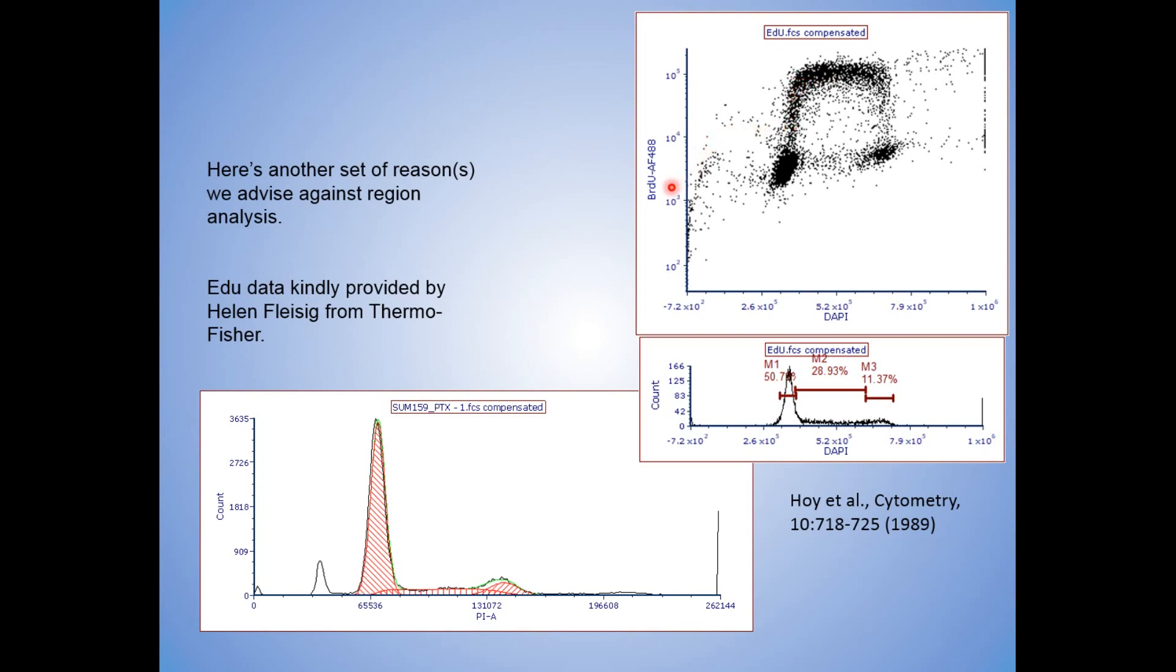They're actually in S phase where the red dot is all the way up here and all the way down here before they finally come into the G2M. What is this doing?